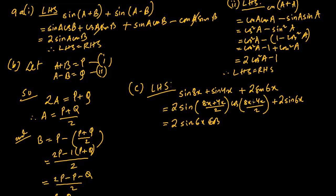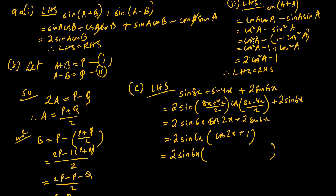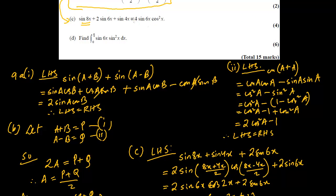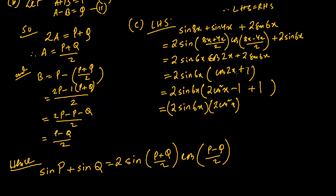So we get 2 sine 6x · cos 2x plus 2 sine 6x. Taking 2 sine 6x common: 2 sine 6x (cos 2x + 1). From the previous result, cos 2x = 2cos²x − 1, so cos 2x + 1 = 2cos²x. This gives 2 sine 6x · 2cos²x = 4 sine 6x cos²x, which is exactly what we needed to prove. Left hand side equals right hand side.